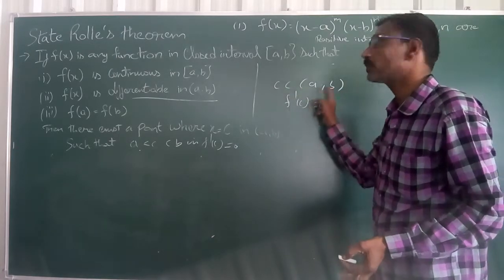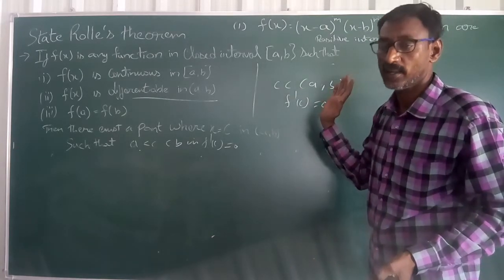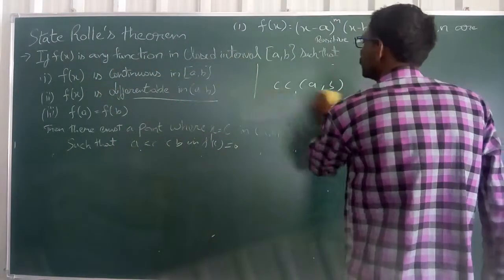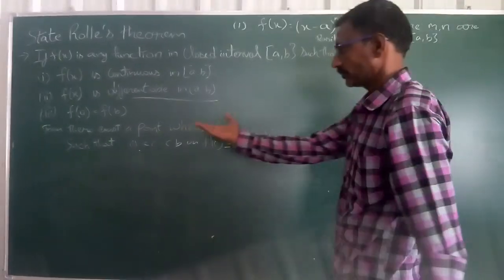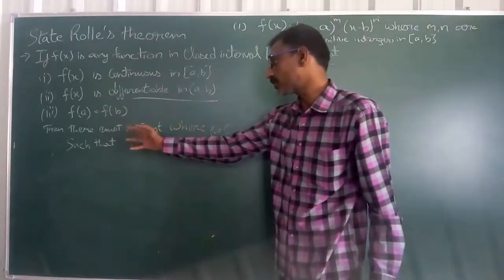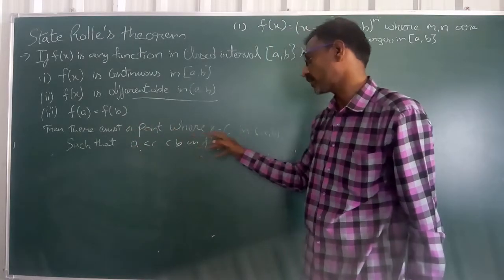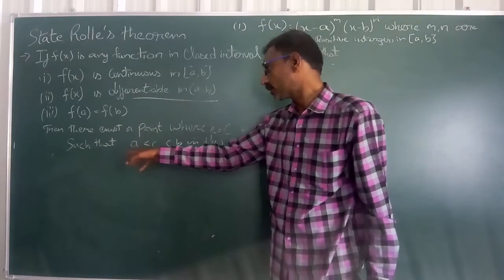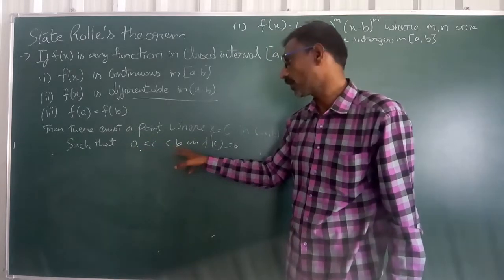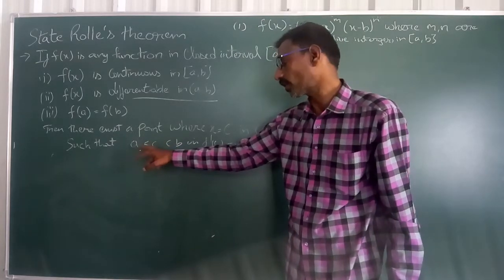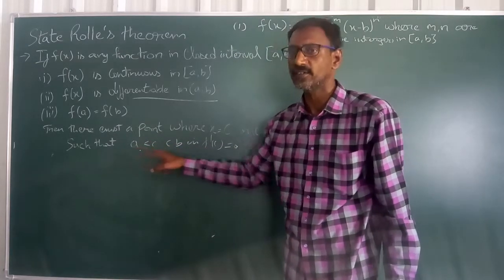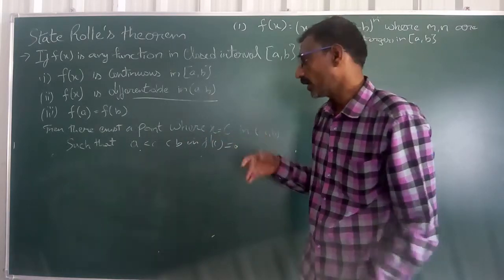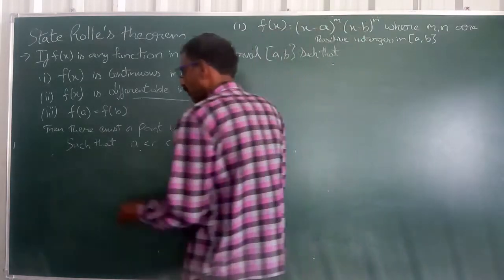And c must lie between a and b. There exists a point x = c in (a, b) such that c lies between a and b and f'(c) = 0. So take f(x).